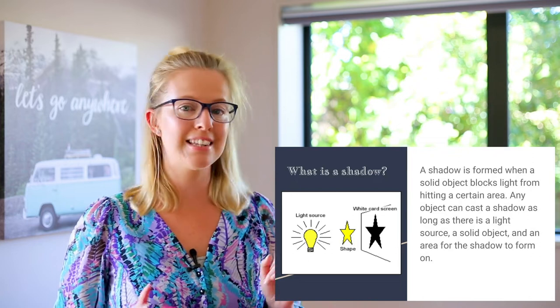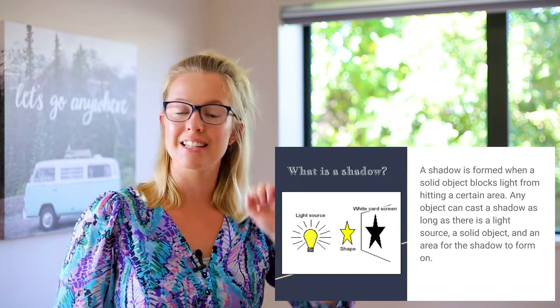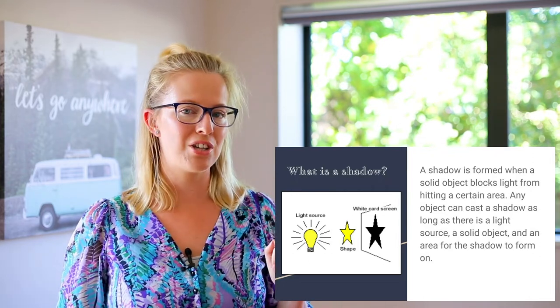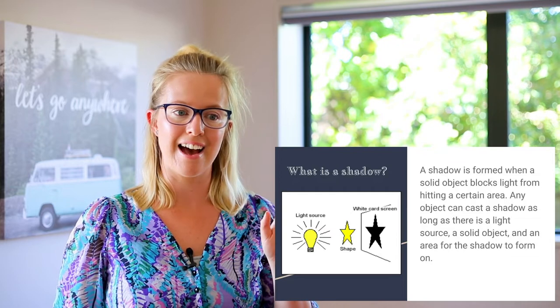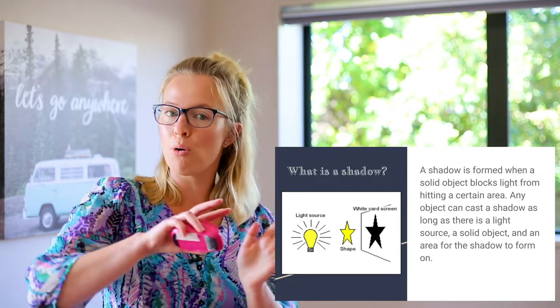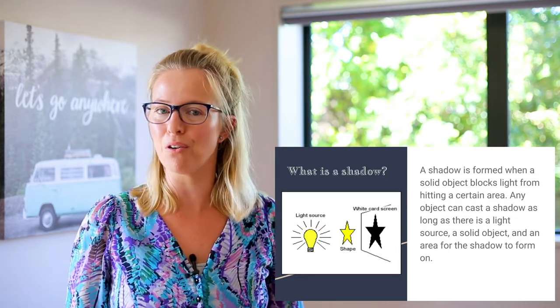And as you can see in this picture, the light source is the light bulb, the solid object is the star, and the shadow is formed on the flat surface of the wall.